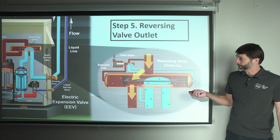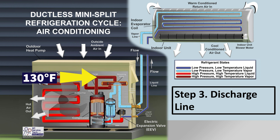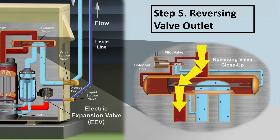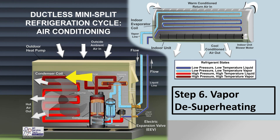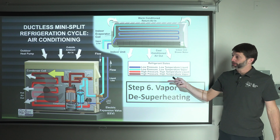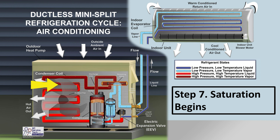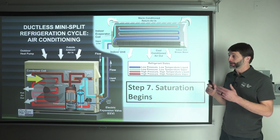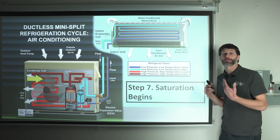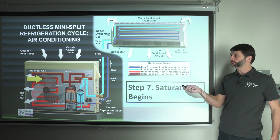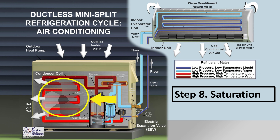To give a few reference points: the discharge line on the compressor might be 130°F for R32 or R410A. Traveling through the reversing valve and entering the condenser coil, it might be about 115°F after a short distance. The vapor refrigerant continues rejecting heat, and maybe it rejects so much heat that it's now 100°F at step seven, where saturation begins. That means liquid and vapor both exist at the same place. The refrigerant holds temperature steady as it travels through the coil.